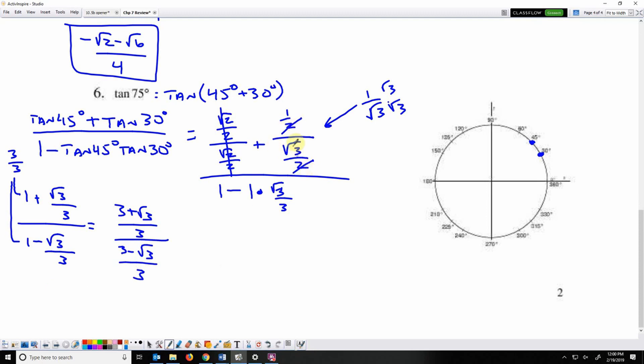Just like up here when these 2's cancel, the top here and the bottom here have the same denominator, so those 3's are going to cancel. So I have 3 plus root 3 over 3 minus root 3. Then I can multiply by the conjugate of the denominator, which is 3 plus root 3.